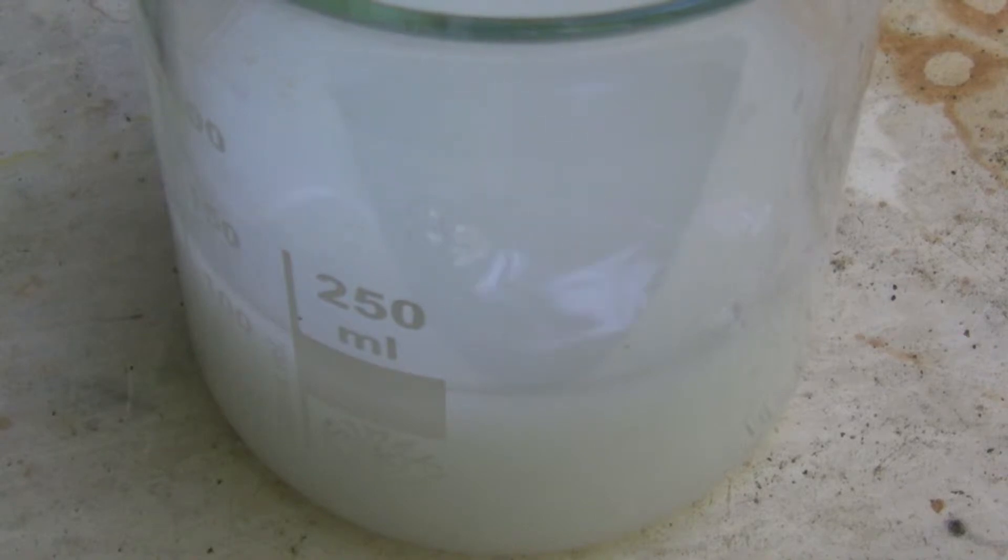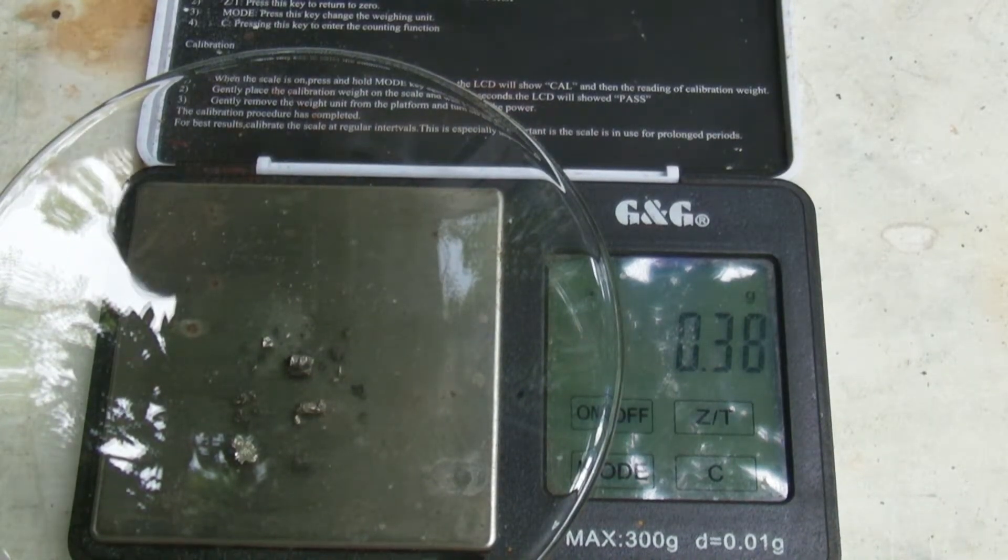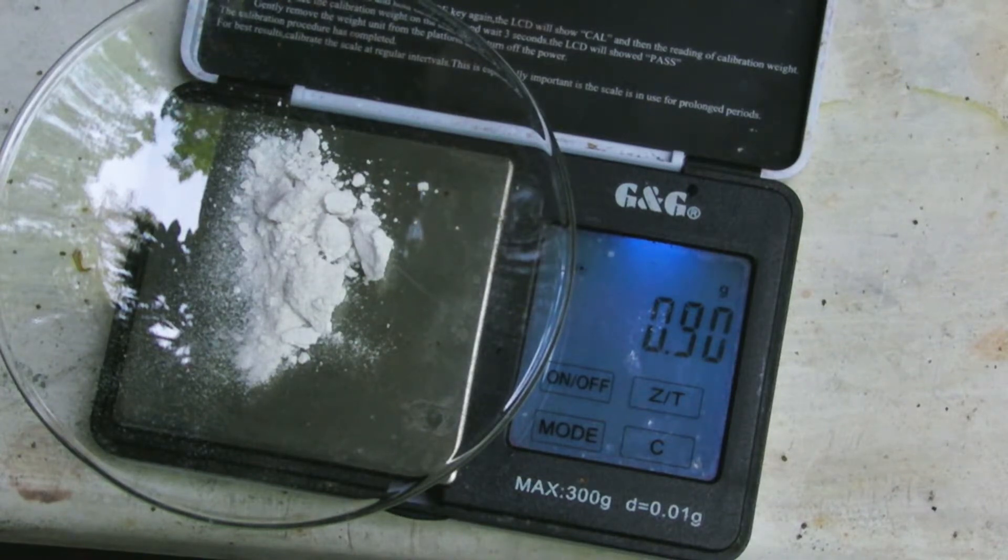The low yield can be caused by the ammonium metavanadate being more soluble in diluted ammonia solution. 0.38 grams of the vanadium did not react, but those can be used again. 0.9 grams of ammonium metavanadate were obtained, which is a yield of 63%.